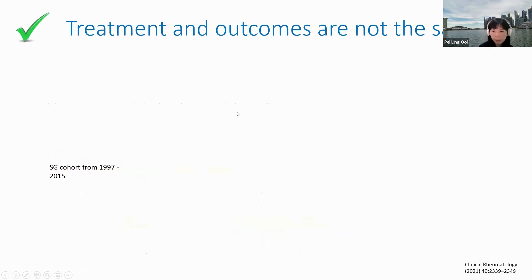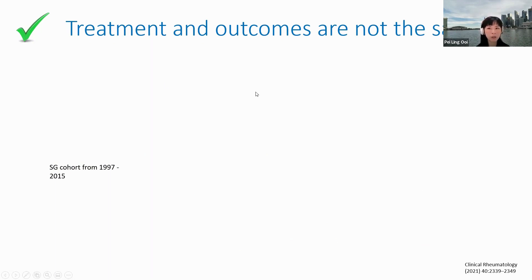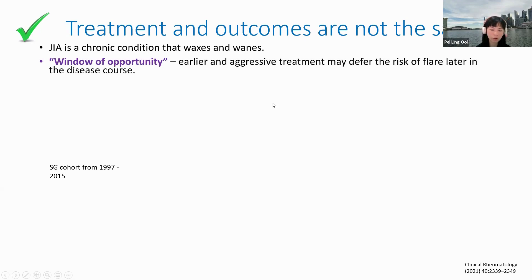In terms of treatment and outcomes, these are also not the same between subtypes — not just between Western and Asian populations, but even within our own Asian population. The hypothesis is that it's really related to genes and how our body responds to different medications. JIA is a chronic condition that waxes and wanes, and there is an important window of opportunity: the earlier and more aggressively you treat to stop the immune system overreaction, the more you defer the risk of flare later on.